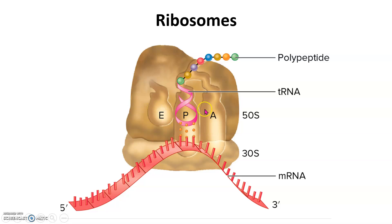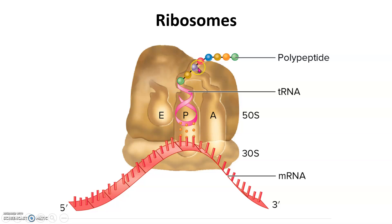There are three sites in the ribosome — some argue two, some argue three, with the debate being whether the exit site is a true site. You have the A, P, and E sites. The A site is the accepting site, where most tRNA molecules first enter the ribosome. The ribosome, being two subunits on top of each other, shifts — imagine them sliding against each other. The P site is where the peptide bond forms; peptidyl transferase forms the peptide bond between amino acids and the growing chain. The E site is exit. So tRNA comes into A, moves to P to transfer its amino acid, moves to E, becomes uncharged, then leaves. The mRNA runs between the large and small subunits.